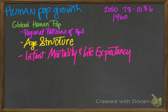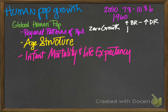Regional patterns of population change to achieve zero growth require either a high birth rate and high death rate, or a low birth rate and low death rate. That's the only way to get a zero growth rate.